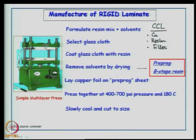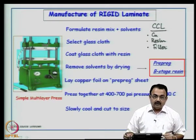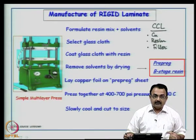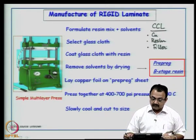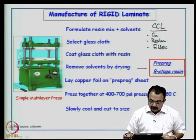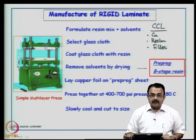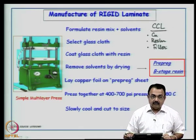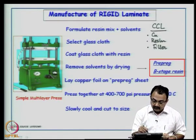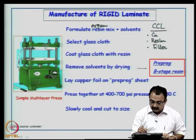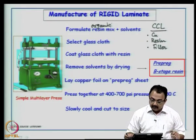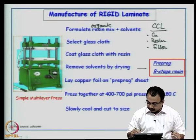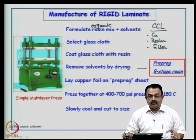We have used schematics in the last class to see what each of these denotes. Now we are going to discuss in simple terms the manufacture of a rigid laminate. We will discuss flex substrates or flex copper clad laminates much later. Typically, when you talk about manufacturing rigid laminates, you essentially require an organic resin. The resin would be an organic resin — we have seen different types. In this particular example, we are going to use epoxy resin.